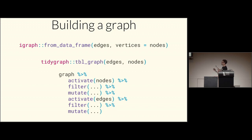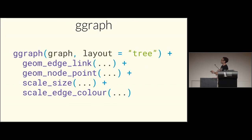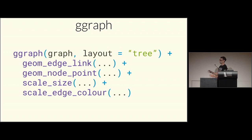Tidygraph provides the same graph functionality but in a standard dplyr-style way. You tell it whether to work on nodes or edges, then filter, mutate, and so on. To visualize the graph, I used the ggraph package — it works just like ggplot except you give it a graph instead of a data frame, specify a layout (tree layout in this case), and use geometries and scales for nodes or edges.